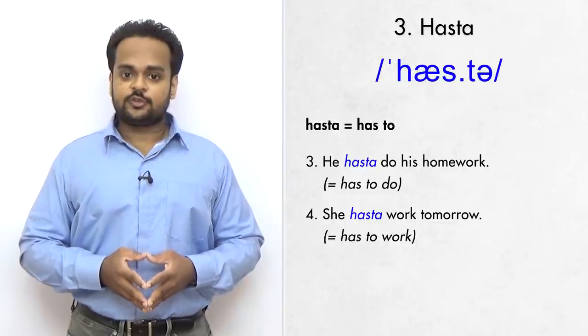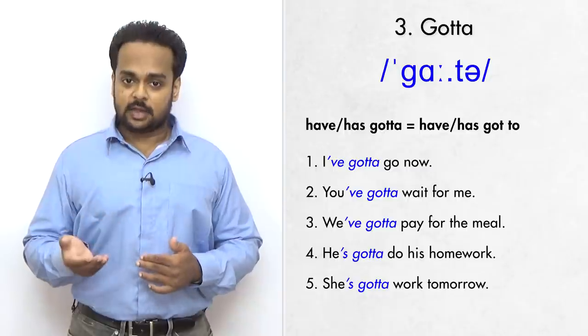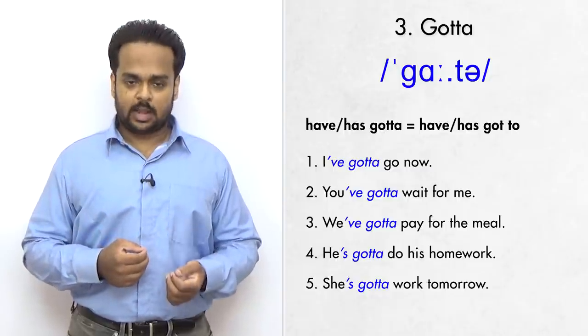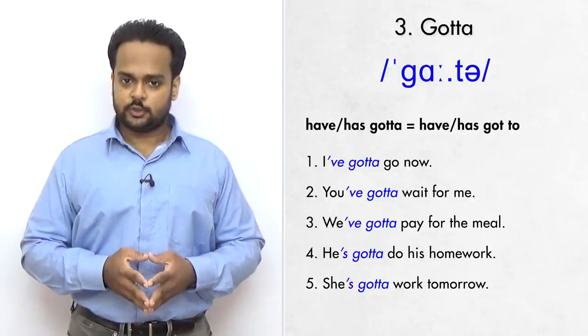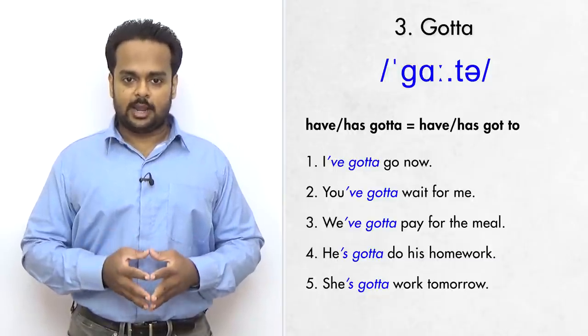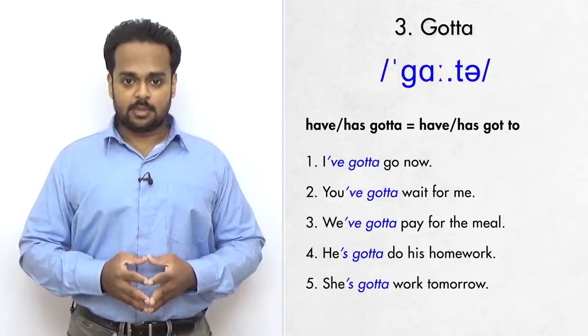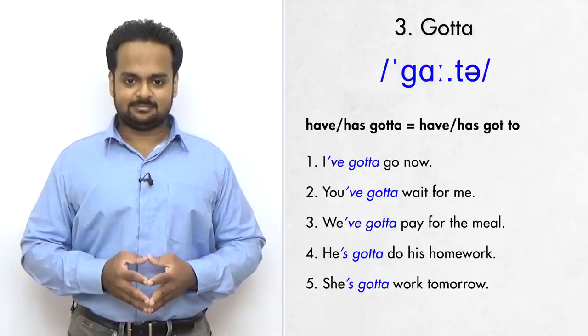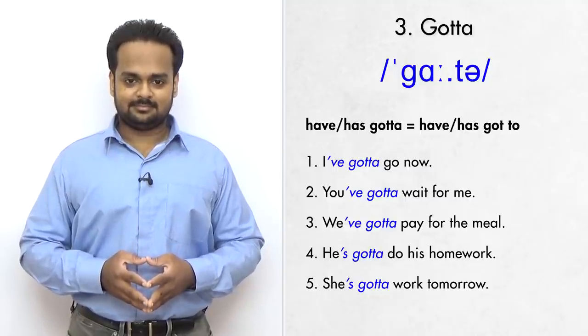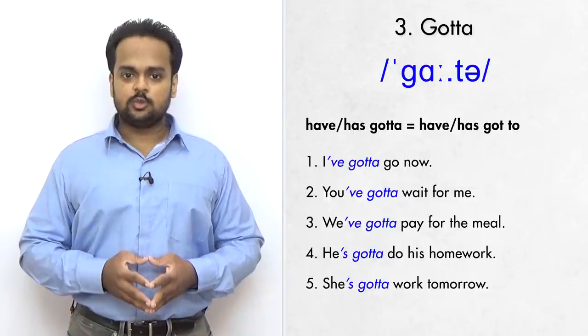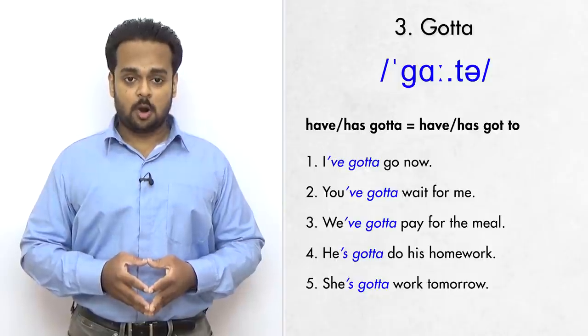In English, have to and has to can also be expressed as have got to or has got to. And they mean the same thing. Got to can be reduced to gotta. So you can say, I've gotta go now. You've gotta wait for me. We've gotta pay for the meal. He's gotta do his homework. She's gotta work tomorrow.